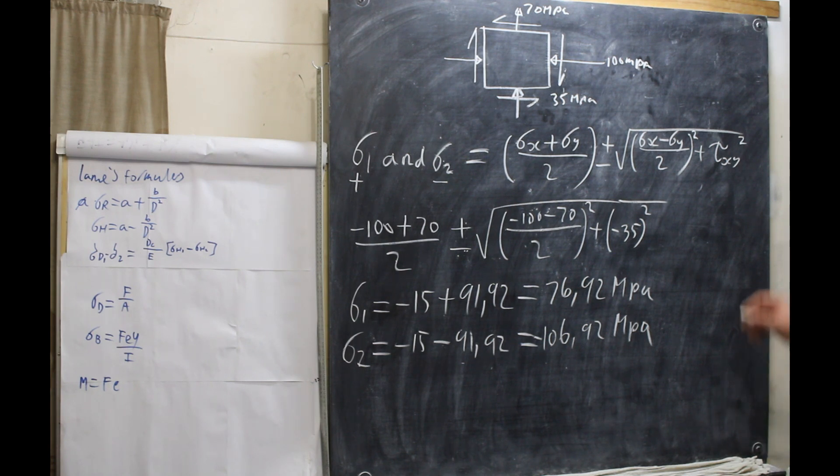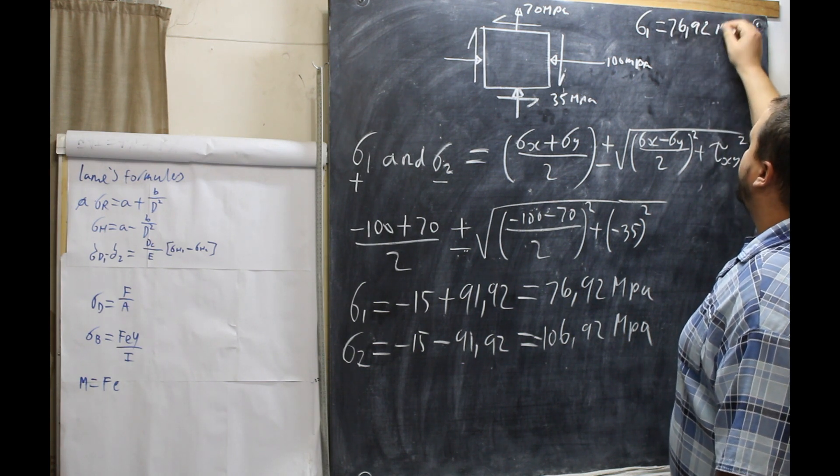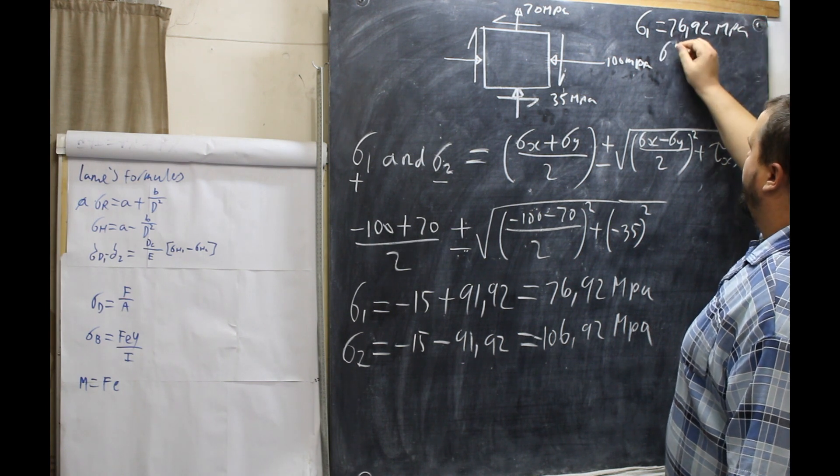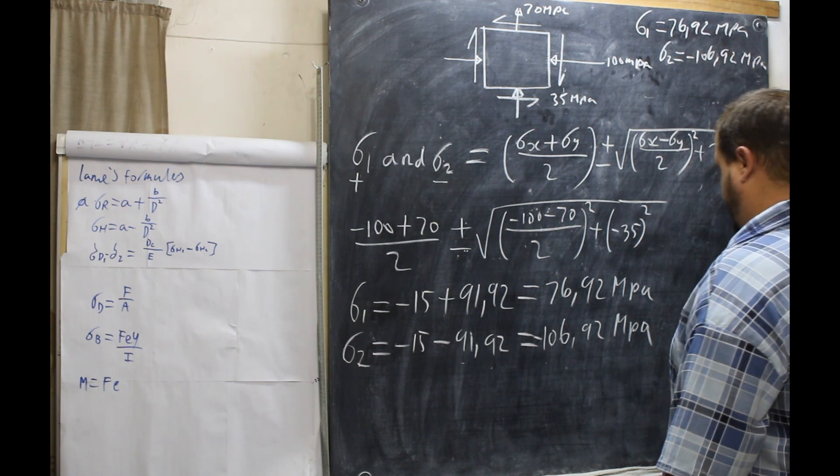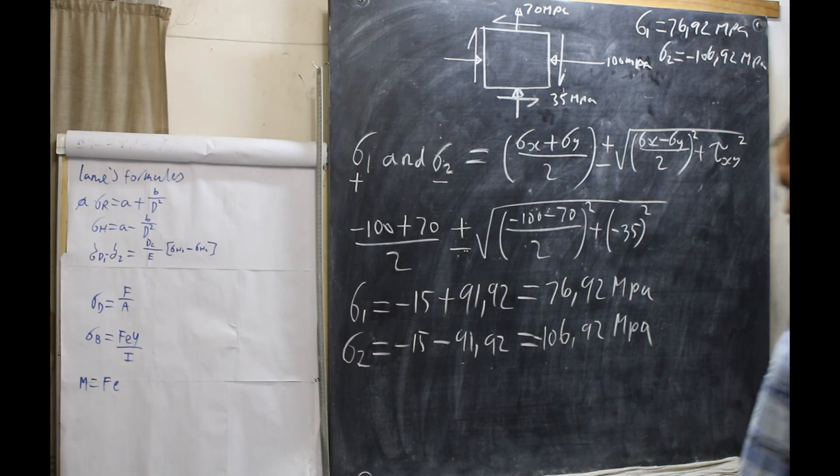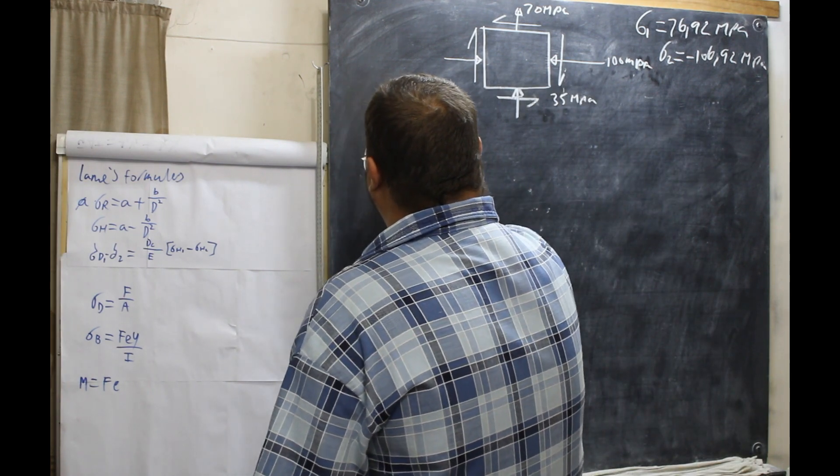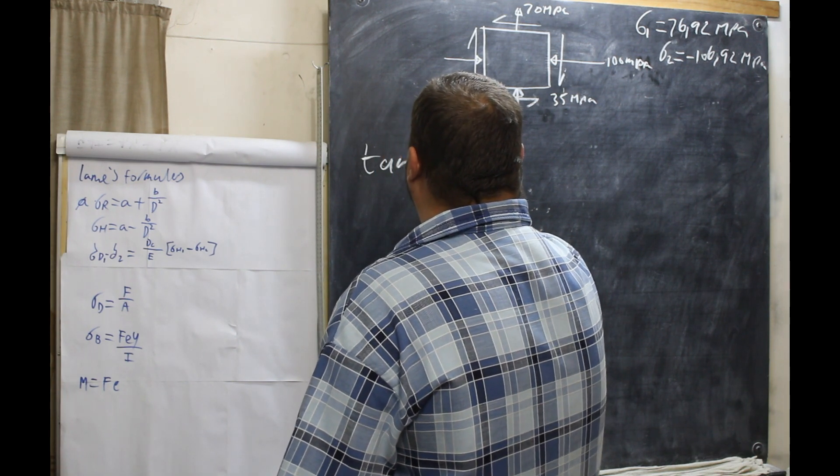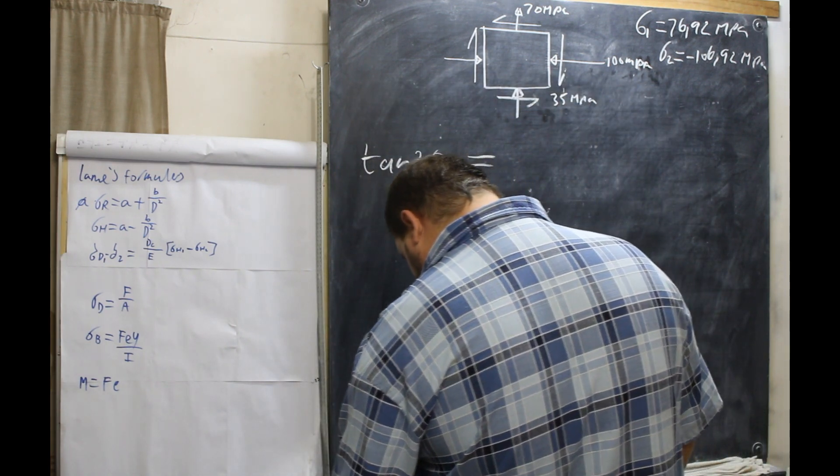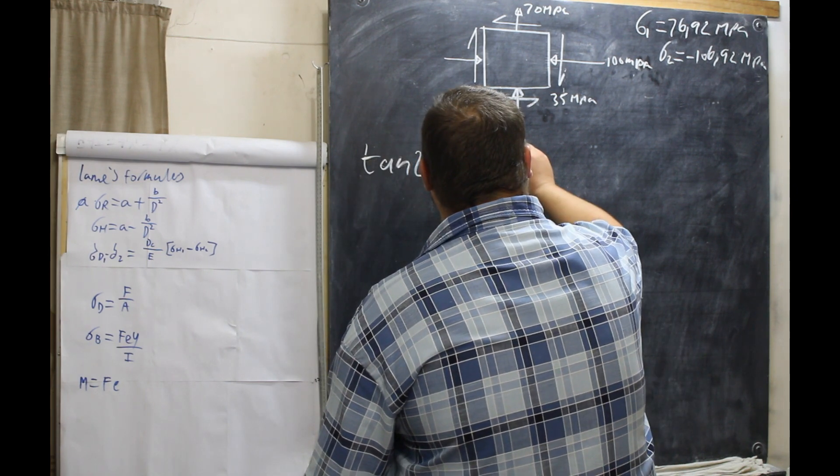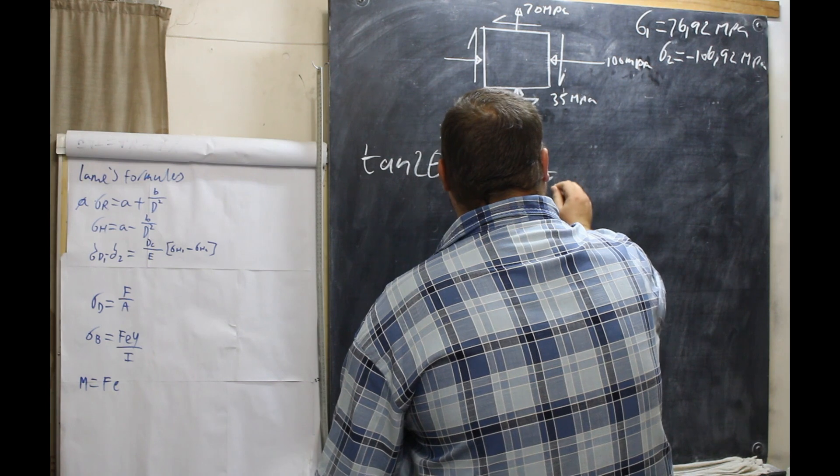Now, we've got to work out the angles. So stress 1 is equal to 76.92 megapascals, stress 2 is minus 106.92 megapascals. So what we've got to do now is erase this. We're going to erase that. And now we're going tan 2θ sub p is equal to 2 shear stress all over σx minus σy.